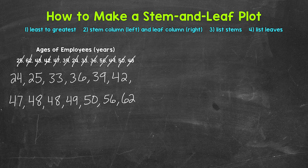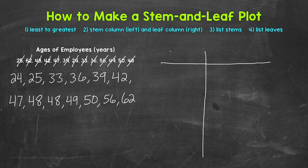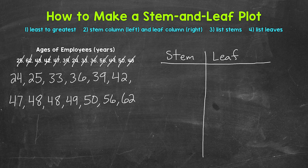Now that everything is in order, we need to create the stem and leaf plot. We're going to make the stem column and leaf column. Let's start with a vertical line and then a horizontal line here. The stem column is on the left and the leaf column is on the right. Taking a look at the data, we have two-digit numbers for this example and they range from 24 to 62. With stem and leaf plots, we split each value — so each age for this example — into a stem and a leaf. Stems will be the tens digits.